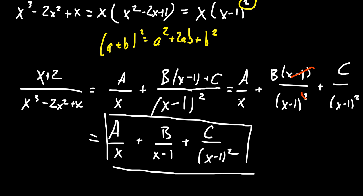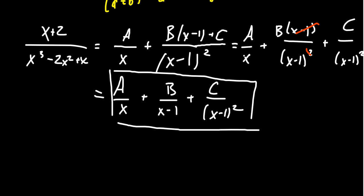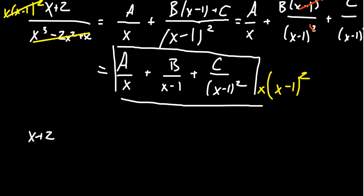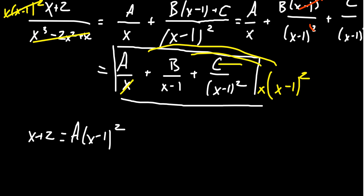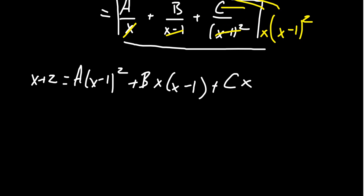Now we simplify. Multiply both sides by x(x-1)² — the factored denominator. The left side becomes x+2. Distributing on the right: for a/x, the x cancels leaving a(x-1)²; for b/(x-1), one (x-1) cancels leaving bx(x-1); and for c/(x-1)², both factors cancel leaving cx. So we have: x + 2 = a(x-1)² + bx(x-1) + cx.